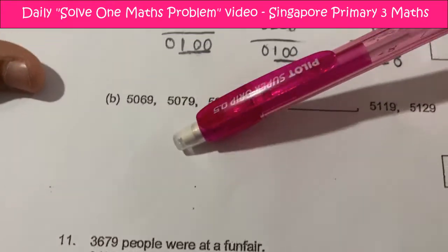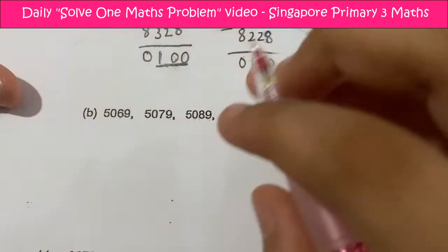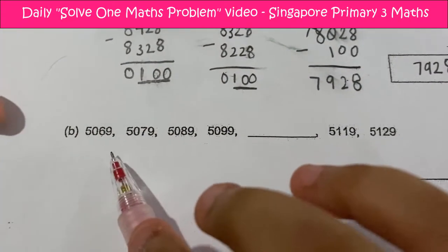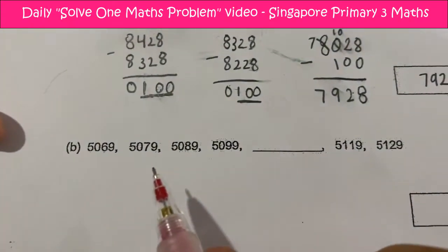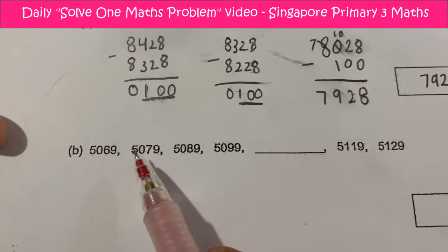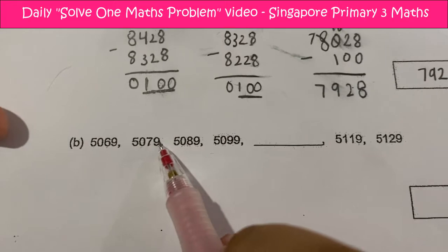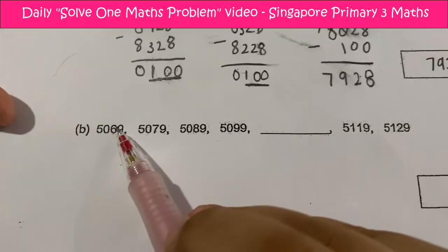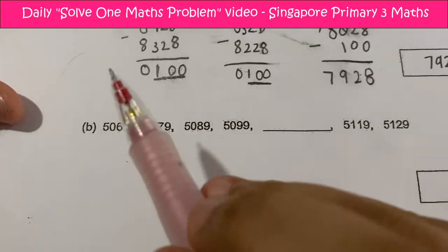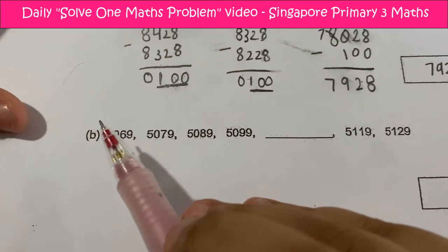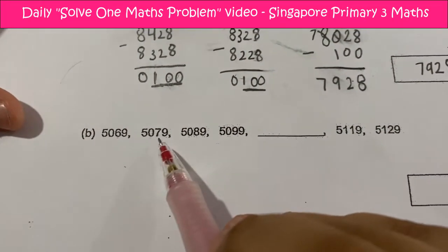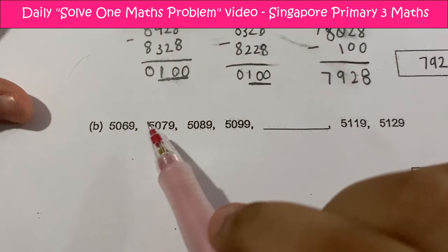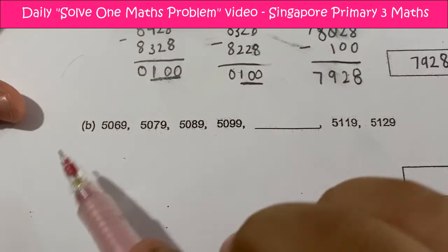This is a number pattern and we can see these two numbers are increasing. We're going to take 5079 minus 5069. We can't take the first and second number directly because six minus seven you cannot subtract.